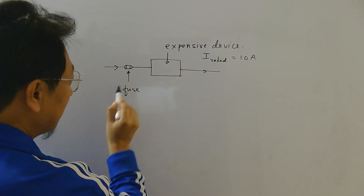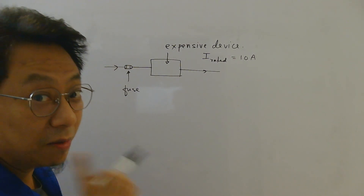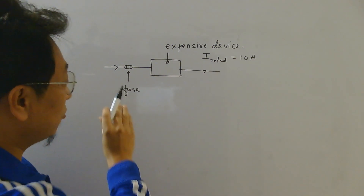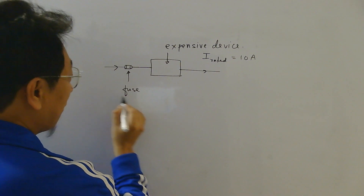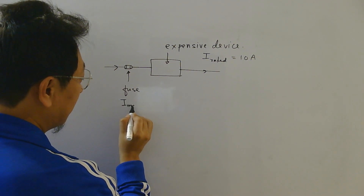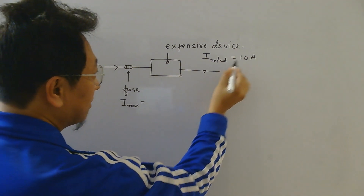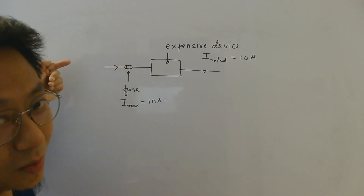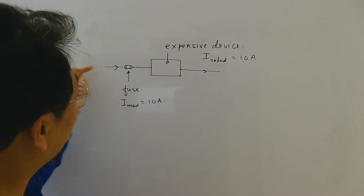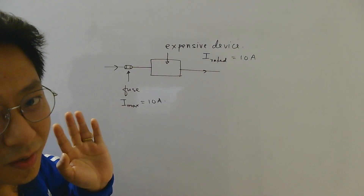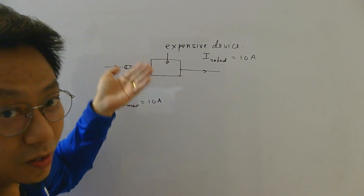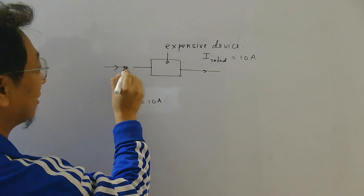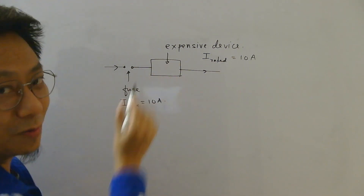We will make sure that the limiting current of this fuse wire — that is the current at which the fuse wire will melt — is exactly equal to 10 amperes. So till the current is 9 ampere, 8 ampere, 9.5 ampere, 9.9 ampere — no problem, the current will flow and the device will work. But once the current becomes more than 10 amperes, the fuse wire will melt. Once it melts, the circuit will be open and therefore the device will be safe.